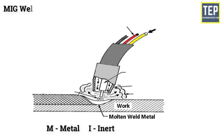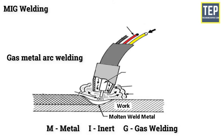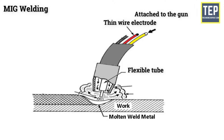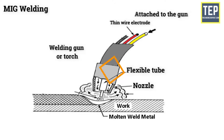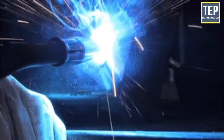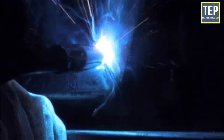MIG stands for Metal Inert Gas welding. This welding process is also identified as gas metal arc welding, which you can also call wire welding. In this type, a thin wire works as the electrode and is fed from a spool attached on a gun, through a flexible tube, and comes out of the nozzle on the welding gun or torch. The wire is fed continuously when the trigger is pulled on the welding gun.